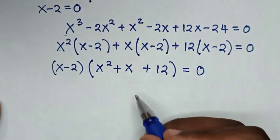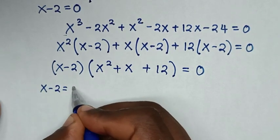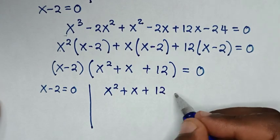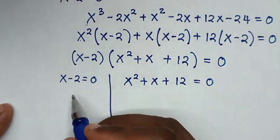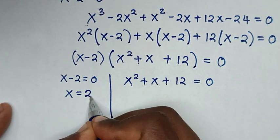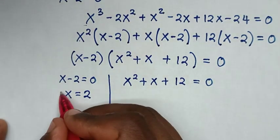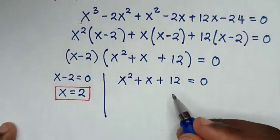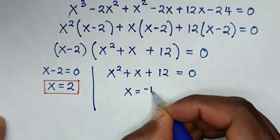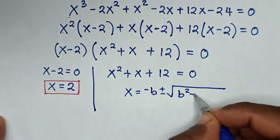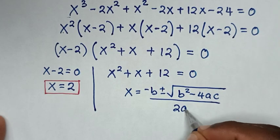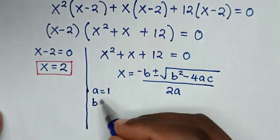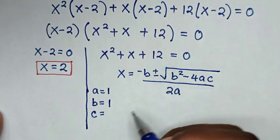From here we have two solutions. The first solution is x minus 2 = 0, and the second solution is the quadratic equation x² + x + 12 = 0. To solve the linear equation, we take negative 2 to the right side: x = 2. This is the first value of x. To solve the quadratic equation we use the quadratic formula: x = (−b ± √(b² − 4ac)) / 2a, where a = 1, b = 1, and c = 12.